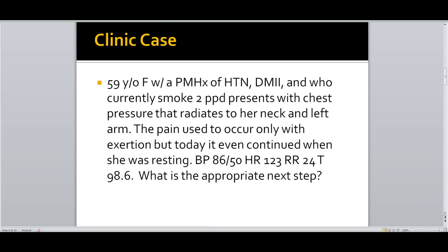Let's start with a clinical case. You're working in an ER and a 59-year-old female with a past medical history of hypertension, type 2 diabetes, and who currently smokes two packs per day presents with chest pressure that radiates to her neck and left arm. The pain used to occur only with exertion, but today it continued even at rest. Her blood pressure is 86 by 50, heart rate 123, respiratory rate 24, and temperature 98.6. What is the appropriate next step?